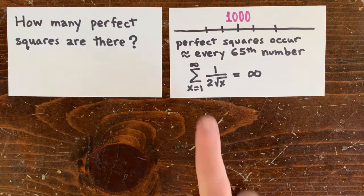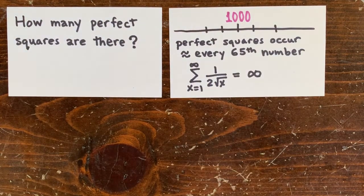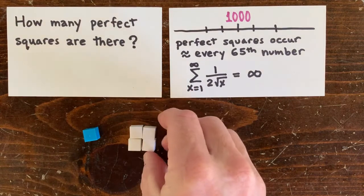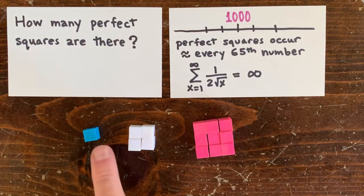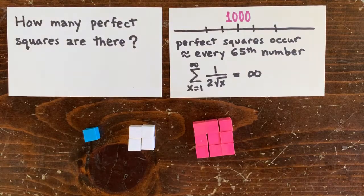If we sum that for all n throughout infinity, the sum diverges instead of converging. So we expect there are an infinite number of squares. And of course, there are.